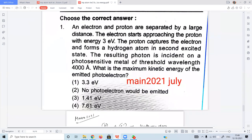An electron and proton are separated by a very large distance. The electron starts approaching the proton with energy of three electron volts. The proton captures the electron and forms a hydrogen atom in the second excited state.